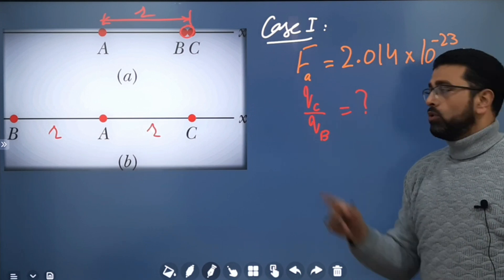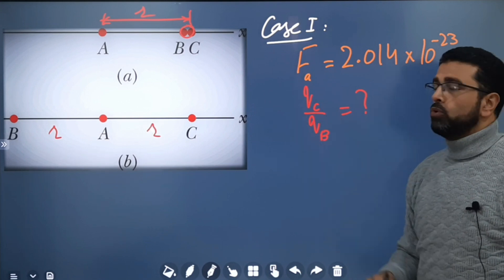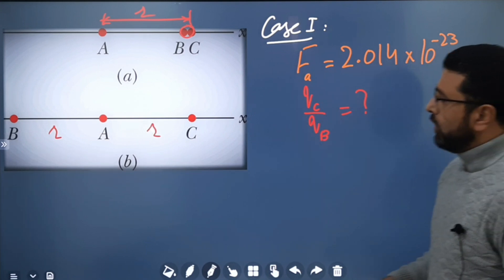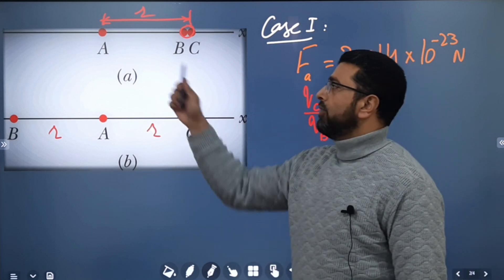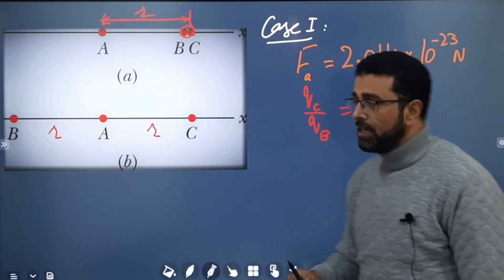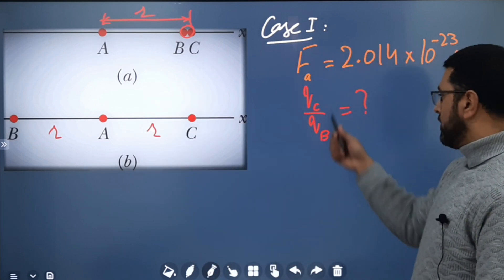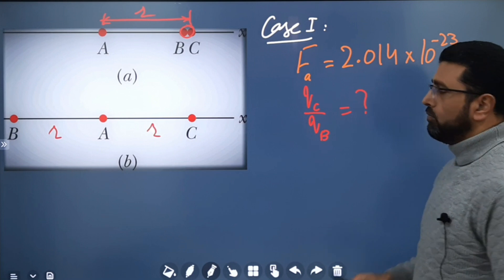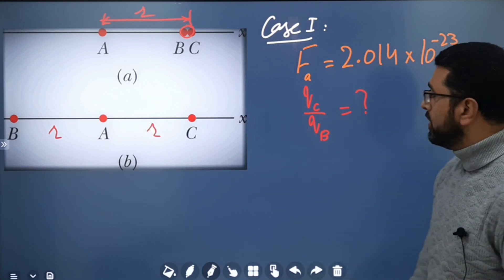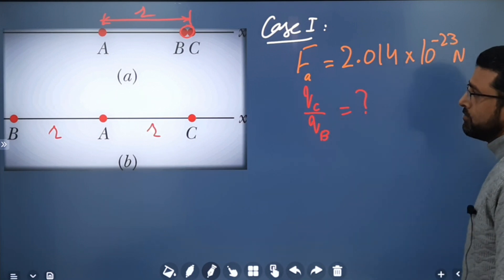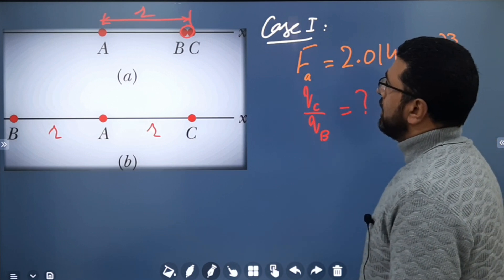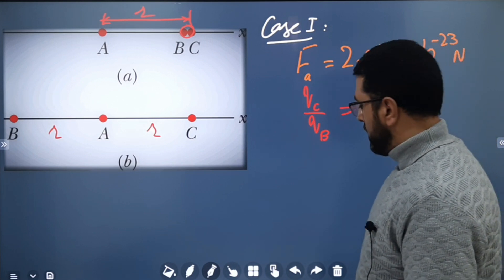We need to find the ratio qc divided by qb. We'll first consider case A, then we'll have two equations, solve them, and find out the ratio qc/qb.